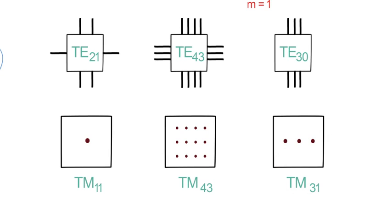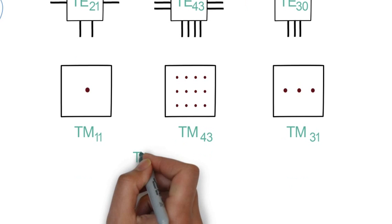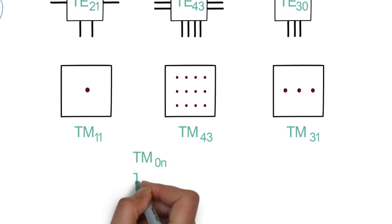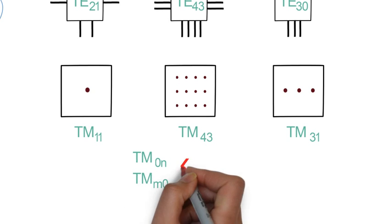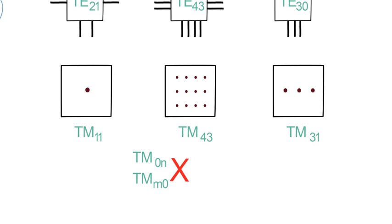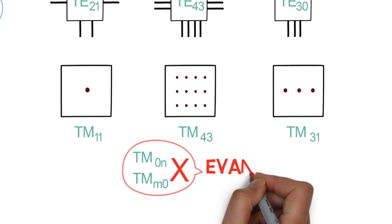Here we can see that even if only a single feed is there in TM mode then it contributes to both m and n values. So m and n can never be zero for transverse magnetic mode. That means TM00 and TE00 are non-existing modes and are called evanescent modes.